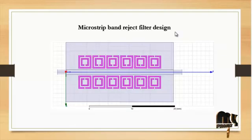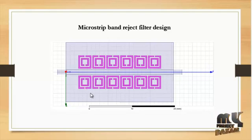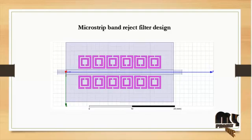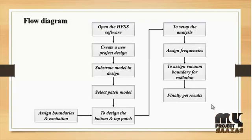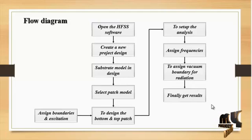This is the microstrip band reject filter design in the HFSS software. We are using a microstrip band with 6 SRR resonators. Whatever values are assumed, the results are calculated using SRR — including return loss, radiation pattern, and all related values. The boundaries are designed with perfect electric boundary conditions. The electric field is assumed by the patch and ground plane, and excitation is applied using wave port analysis for S11 and S21 parameters.